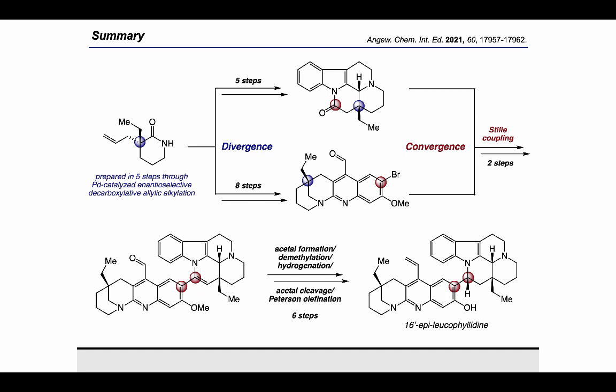In summary, we successfully developed a divergent-convergent strategy to access an epimer of Leucofolidine. Through palladium-catalyzed enantioselective decarboxylative allylic alkylation, we prepared enantioenriched lactam building blocks in five steps. From this building block, we divergently prepared both the western and eastern fragments, then forged them together via Stille coupling. The final stage involved acetal formation, demethylation, directed hydrogenation, acetal cleavage, and Peterson olefination to afford 16-prime epi-Leucofolidine. This work was published in JACS just a couple of months ago.